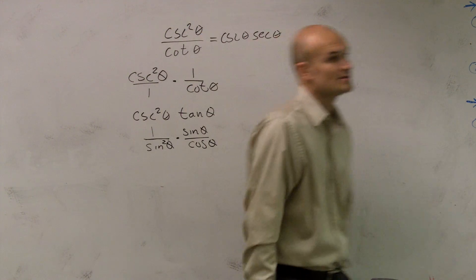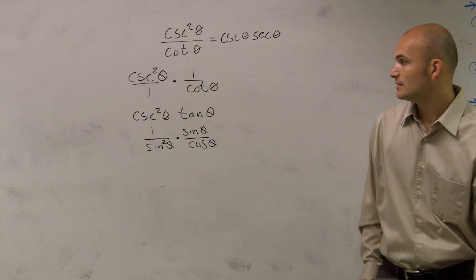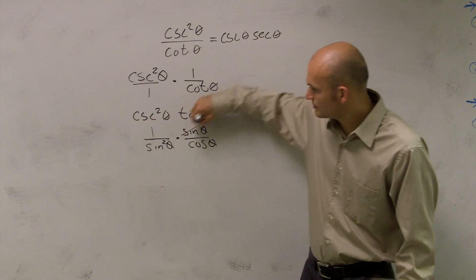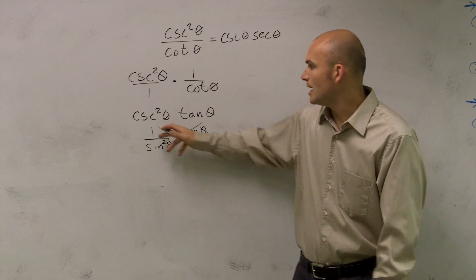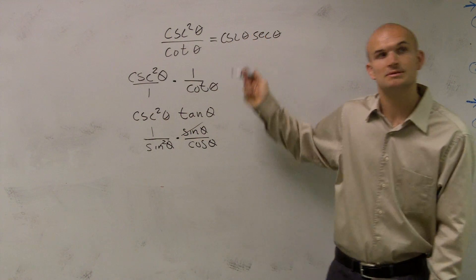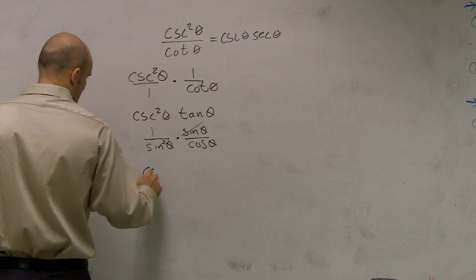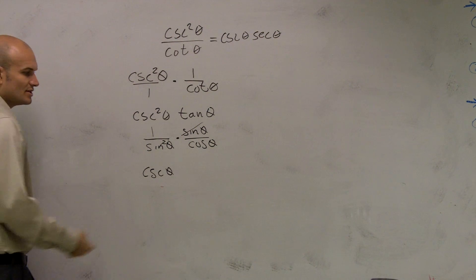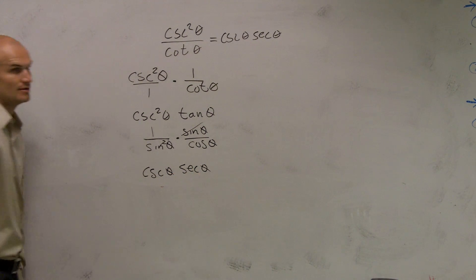And again, this is off of your identities, which I told you guys to have. So you can just go and convert them in. Now, like I said, I'm just trying some things. Those will cancel out. I'm left with 1 over sine, which is cosecant of theta. And I'm left with 1 over cosine, which is secant of theta.